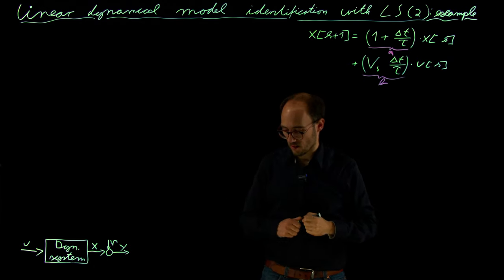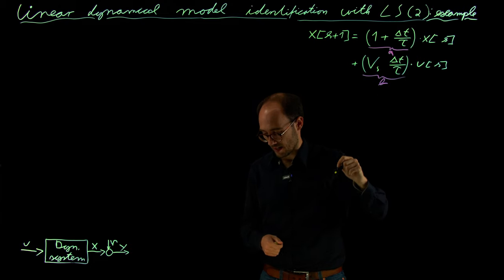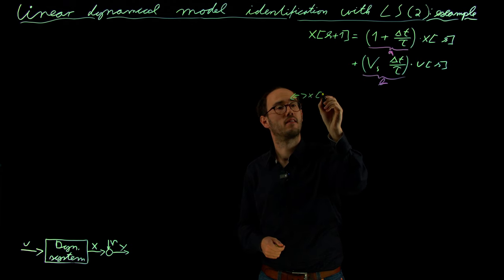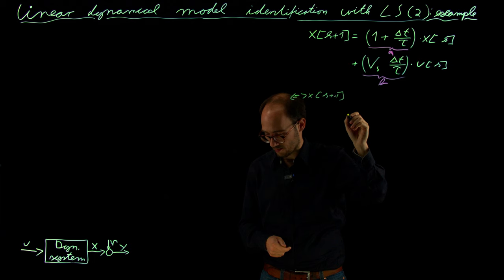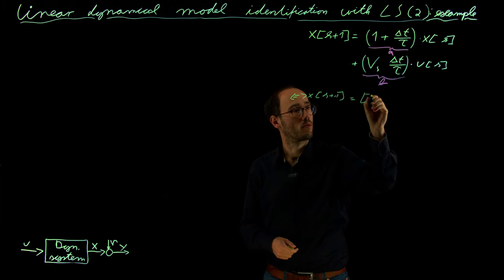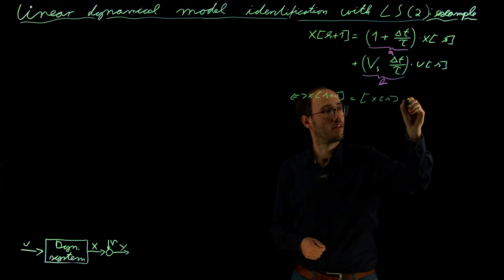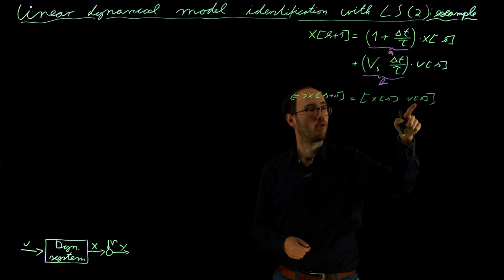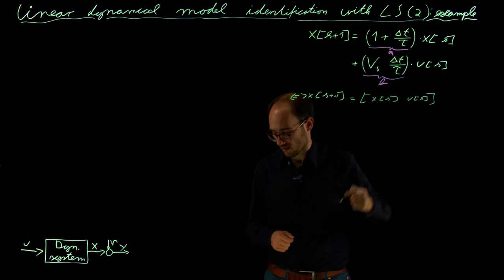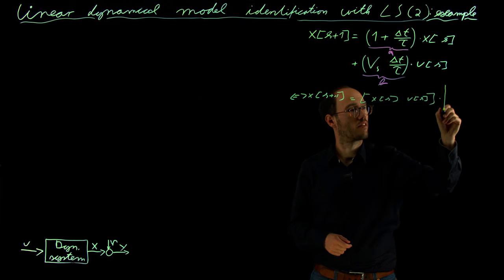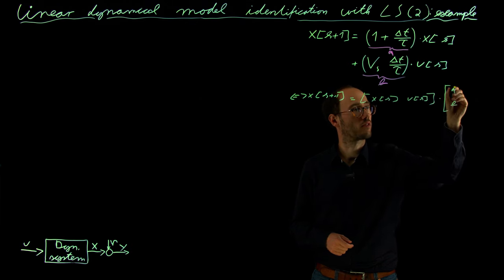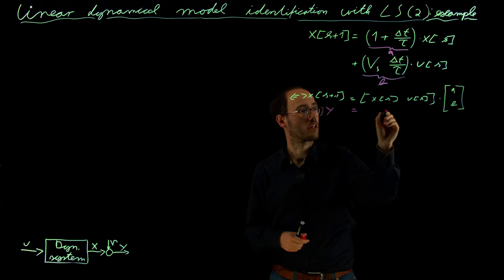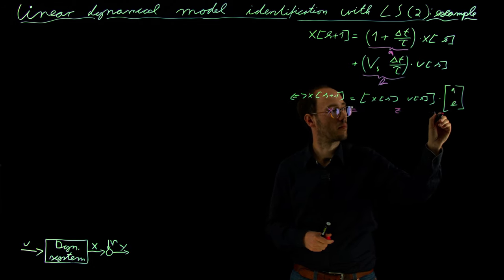In order to rewrite that, as usual, we can rewrite the right-hand side. So we therefore get x of k plus 1 is identical to x of k and u of k. Here I don't need to transpose them anymore, as in contrast to the previous video, because x and u are just scalars, as mentioned, and this is our unknown parameter vector with A B. So as usual, y is equal to that times w, in our typical least squares fashion.